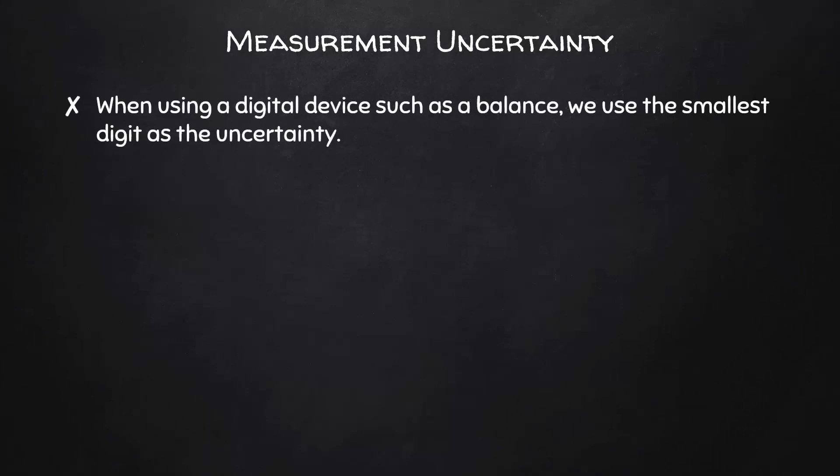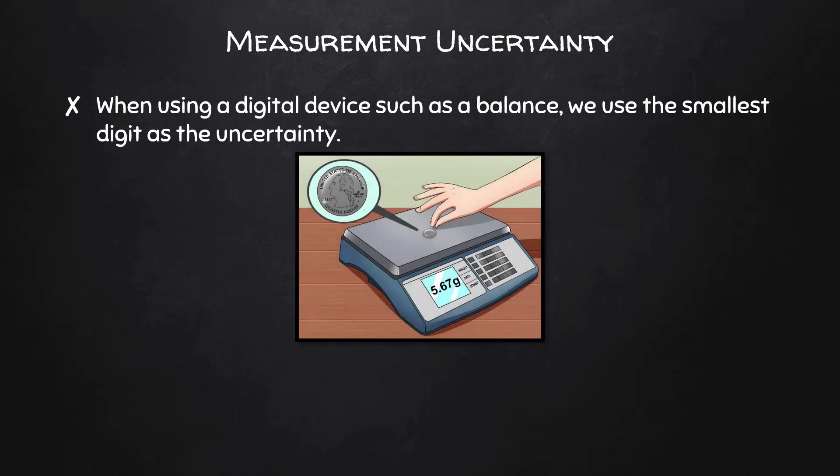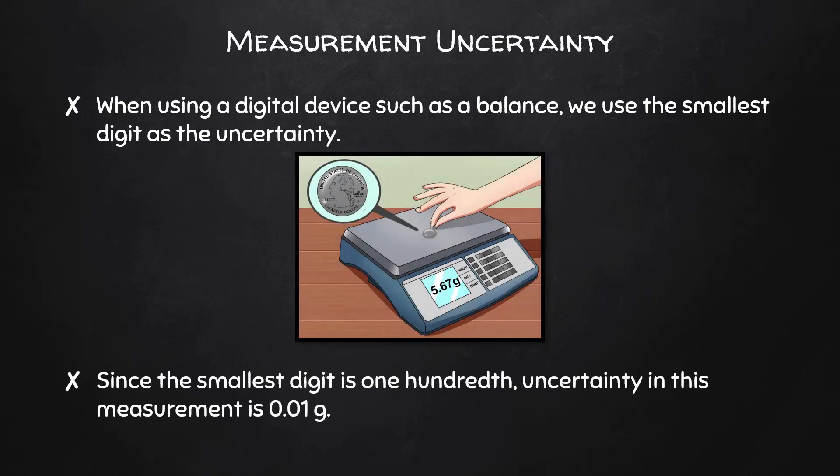When using a digital device, such as a balance, we use the smallest digit as the uncertainty. Since the smallest digit is one hundredth, the uncertainty in this measurement is 0.01 grams. We would express this measurement as 5.67 ± 0.01 grams.